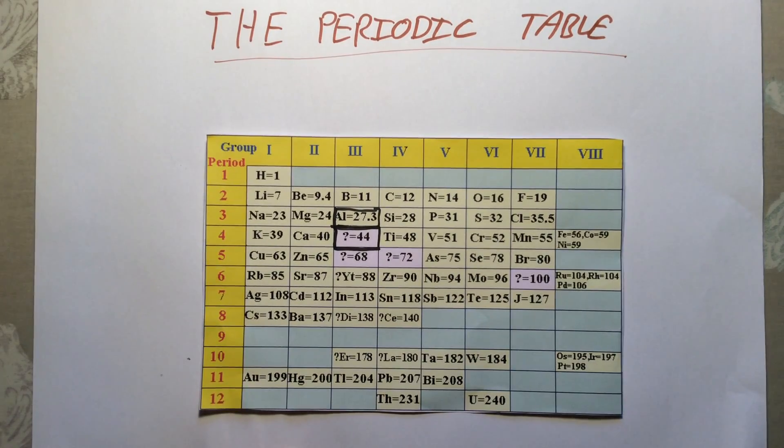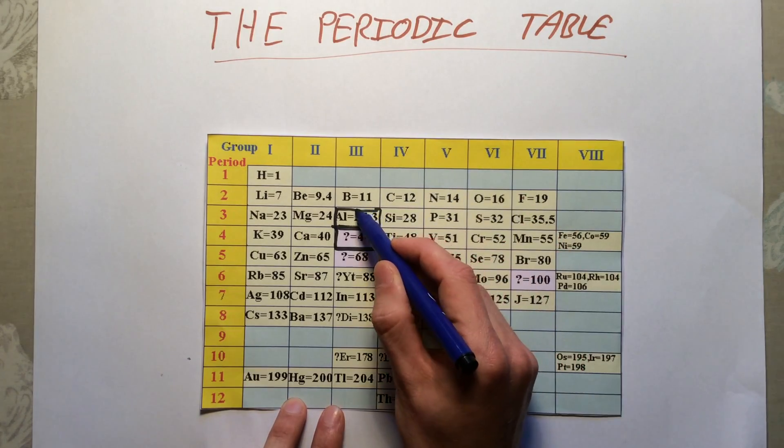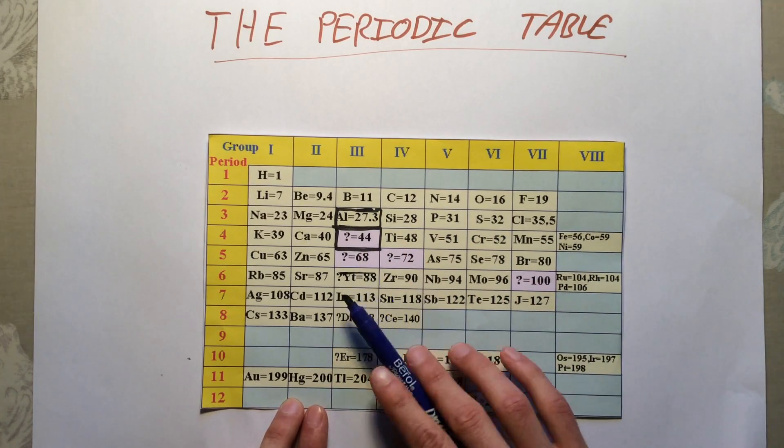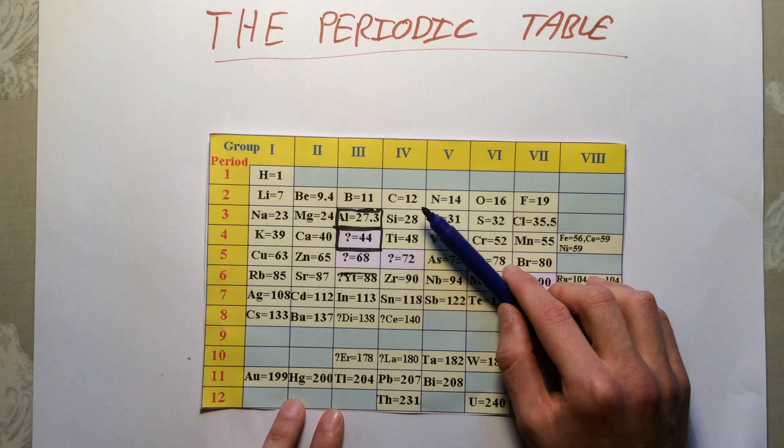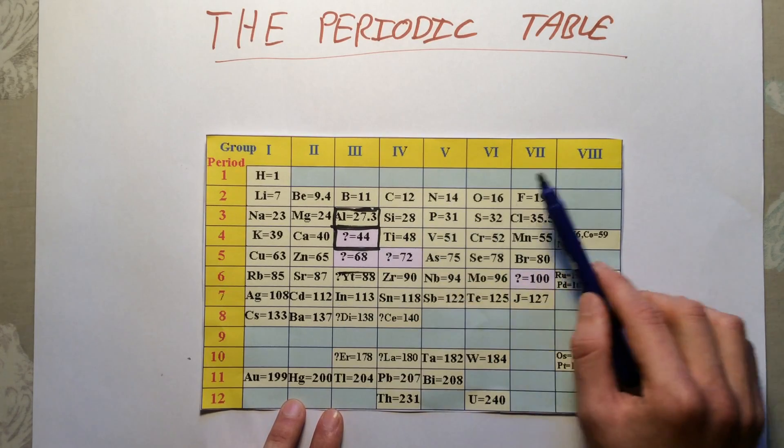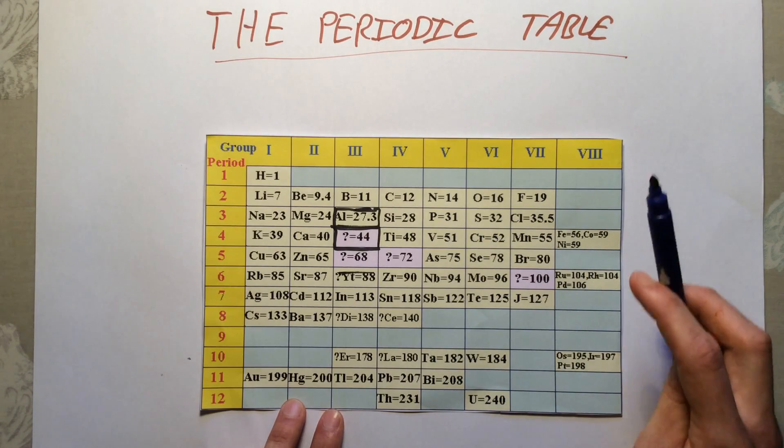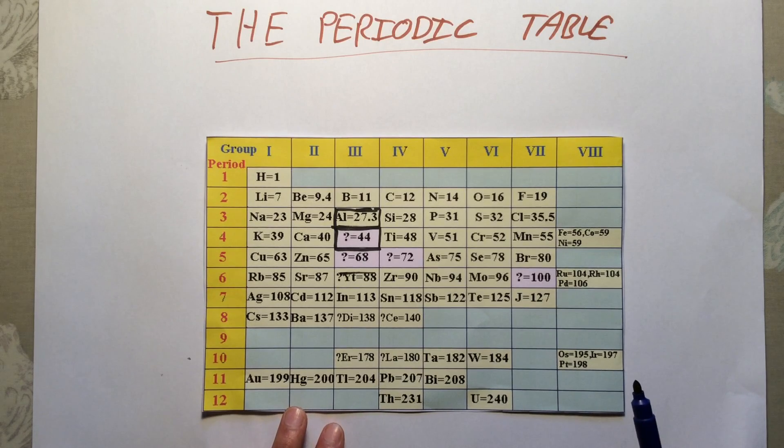Not only did he predict the elements that didn't exist, he also predicted exactly what they would be like. He said, I know for example that aluminum has this mass, I know that below it the element has this mass, therefore I predict the element that we're going to discover will have this mass. I also predict it will be a solid, I also predict it will have this exact melting point. And later on as these elements started to be discovered, he was actually proven perfectly correct. So his predictions were all true. That was a real influential, really important kind of discovery that Mendeleev made. He left gaps for elements that were undiscovered and he also made predictions about their properties.